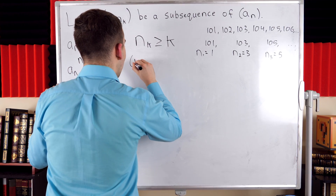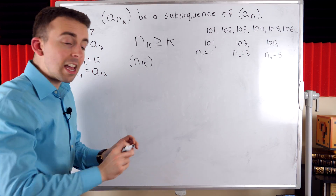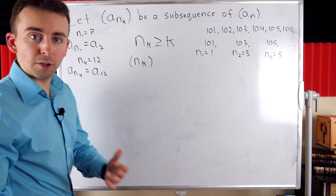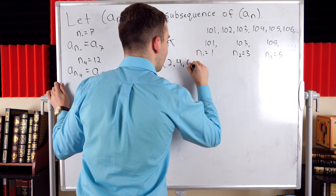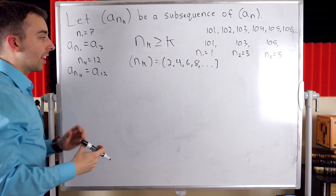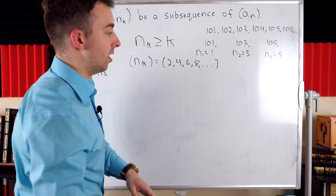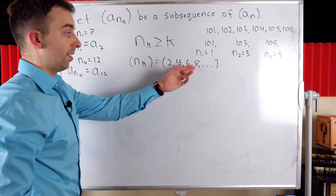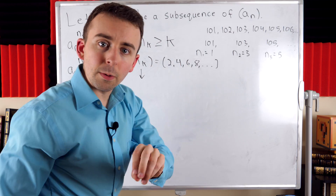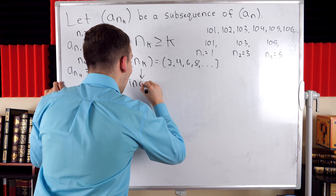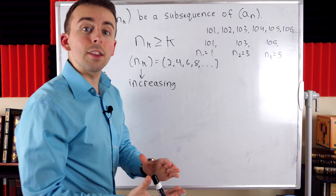We can think of n_k itself as a sequence of numbers picking out terms from the original sequence. For instance, if n_k equals 2, 4, 6, 8, and so on, that's telling us our subsequence consists of the even-position terms of the original sequence. By definition, this sequence that picks out terms for our subsequence has to be strictly increasing — the terms of the subsequence must be moving forward in the original sequence.